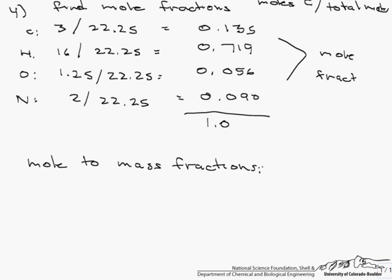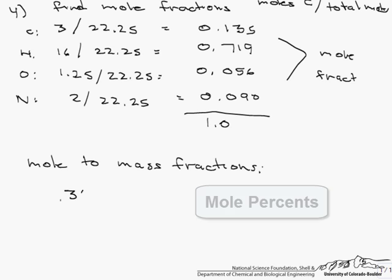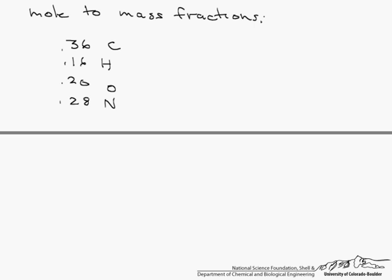We're going to start with the same percentages except remember these are going to be mole fractions. So we have 36% carbon, 16% hydrogen, 20% oxygen, and 28% nitrogen. Those are going to be our mole fractions. So now again we start with assuming a basis. However, because these are mole fractions, we should assume a basis in moles. We're going to assume a basis of 100 moles.